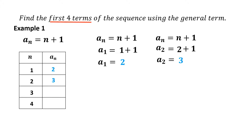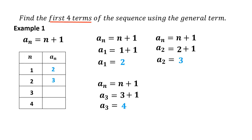Let us find the third term using the general term a sub n equals n plus 1. Substitute n equals 3: a sub 3 equals 3 plus 1, which equals 4. Therefore, the third term of the sequence is 4.